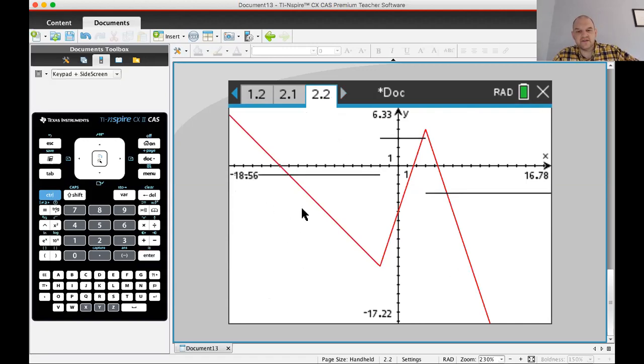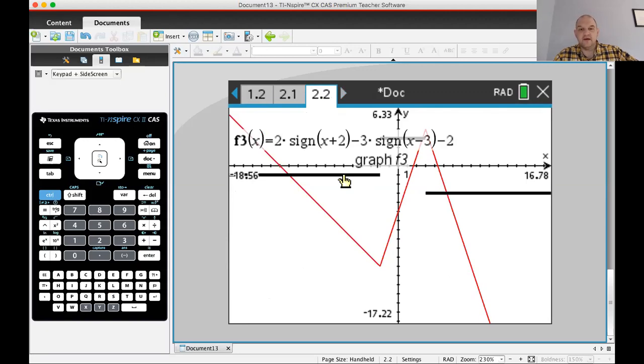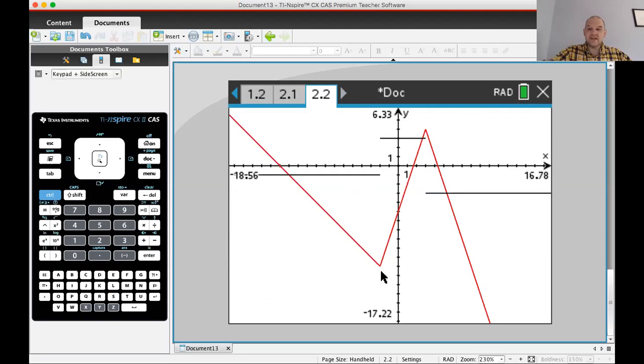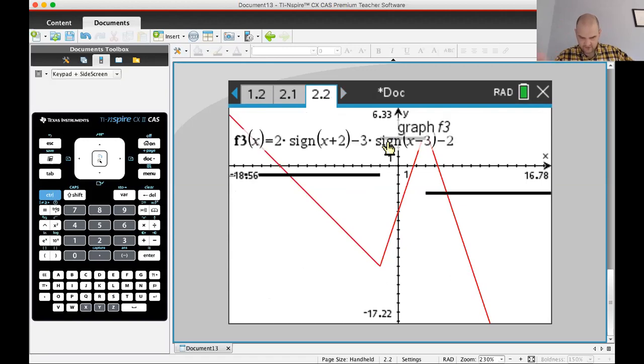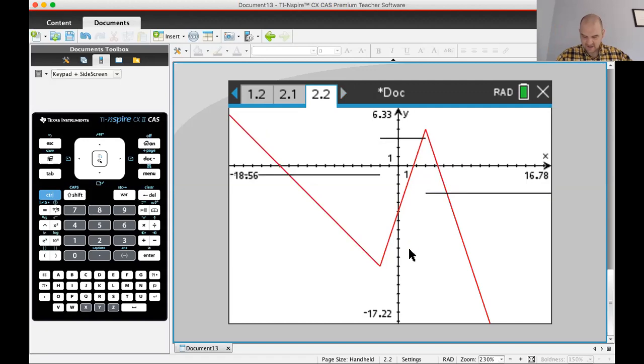So what's this telling us? This is telling us that the slope of this graph is negative 1 until we get to here, which is negative 2, x equals negative 2. The slope instantaneously switches from negative 1 to positive 3. And then at x equals 3, it instantaneously changes again. There's no smooth transition, which is why the derivative fails to exist.